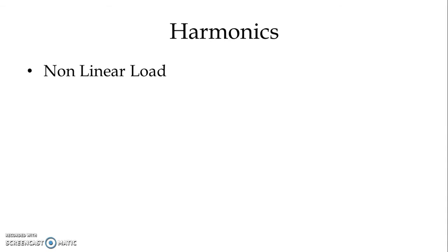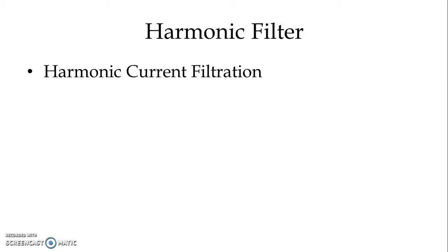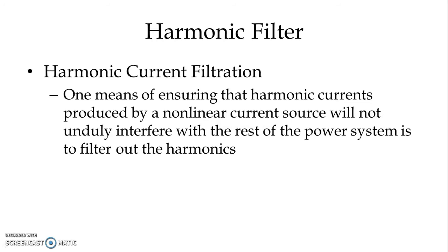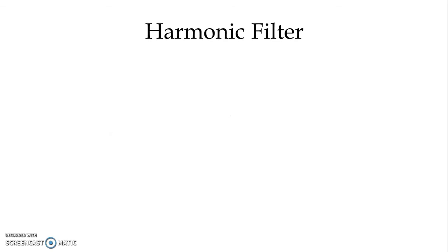Because of nonlinear loads, harmonic current is generated and this harmonic current will propagate towards the source. It will have harmful effects on the power system as a whole, and we need to filter out this harmonic current. Harmonic current filtration is one means of ensuring that harmonic currents produced by a nonlinear current source will not unduly interfere with the rest of the power system.